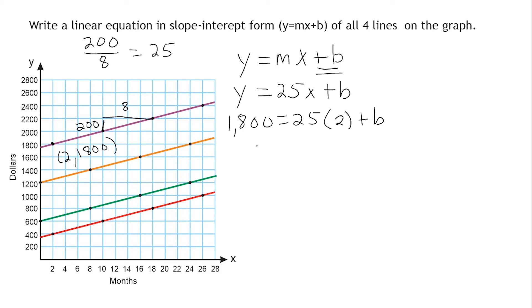So now we have 1,800 equals 25 times 2, which is 50. And at this point, we can just do a little bit of mental math. So I can just subtract 50 from 1,800, which would give us 1,750, because if I took 1,750 and added it to 50, that would be 1,800.